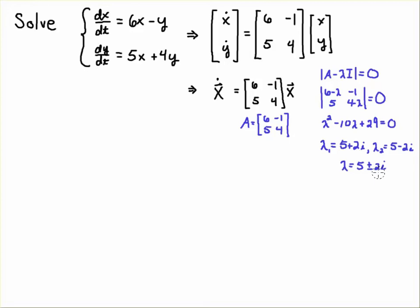That's a conjugate pair. We expect that to happen because we expect the 5 plus or minus 2i. So I'm going to focus on the lambda 1 for this video. So I'm just going to pick lambda 1. Remember the complex case, you only have to do half the work.